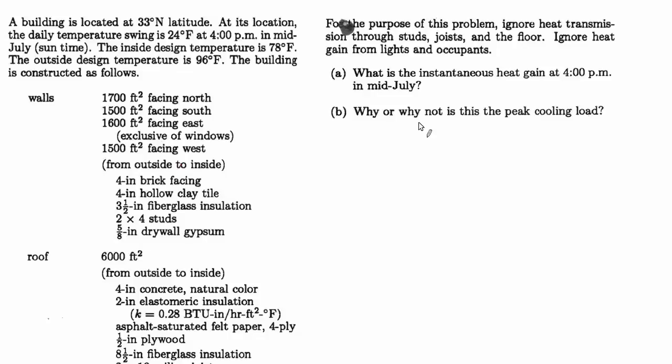A building is located at 33 degrees north latitude. At its location the daily temperature swing is 24 degrees. At 4 p.m. in mid-July sun time, the inside design temperature is 78 degrees, the outside design temperature is 96 degrees. The building is constructed as follows: we have the area for the walls — north, south, east, and west — and we know the materials used for the building construction for the walls and can find their R or K values.